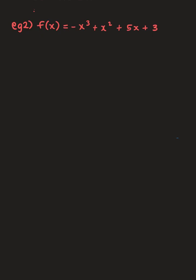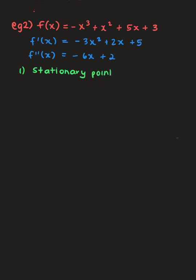Example two: f(x) = -x³ + x² + 5x + 3. I first find the first derivative using the power rule: -3x² + 2x + 5. The constant falls away. The second derivative is -6x + 2. Now, noting that 'a' is negative, the graph is going to start off by decreasing.